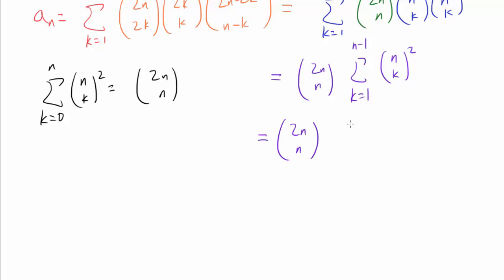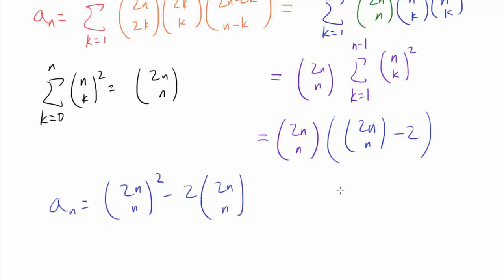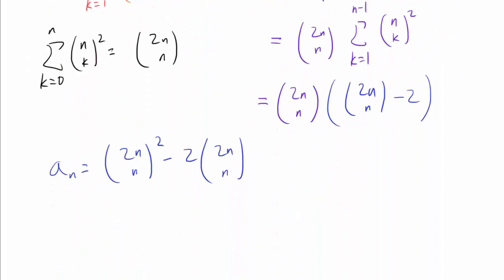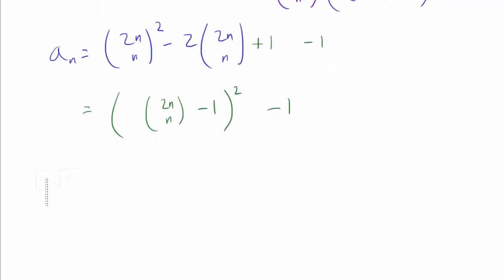This tells us our summation from k=1 to n-1 of C(n,k) squared equals C(2n, n) minus the k=0 and k=n terms, which each evaluate to 1, so we subtract 2. Therefore a_n equals C(2n, n) times (C(2n, n) minus 2), which equals C(2n, n) squared minus 2 times C(2n, n). Notice that a_n is very close to a perfect square: adding 1 gives (C(2n, n) minus 1) squared. So a_n equals (C(2n, n) minus 1) squared minus 1. It is then intuitive that ⌊√(a_n)⌋ equals C(2n, n) minus 1.